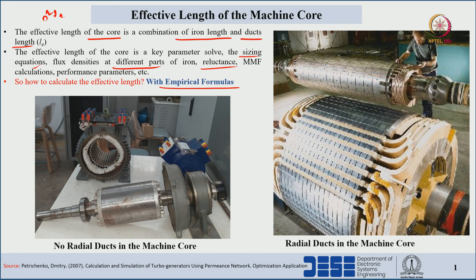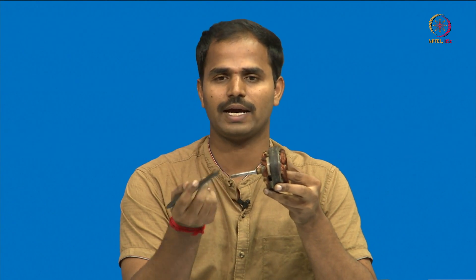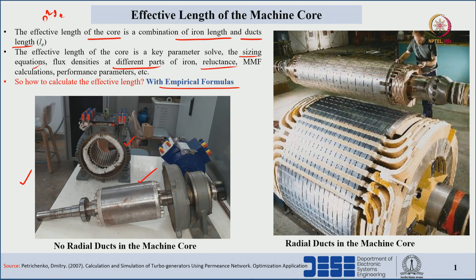We can see here there are no ducts on the rotor side as well as the stator side. I am also showing here one motor — this is the stator and this is the rotor. There is no duct on the stator side; the core is complete iron. On the right side we can see a large machine where the length of the core will be very high.